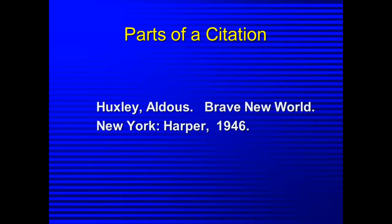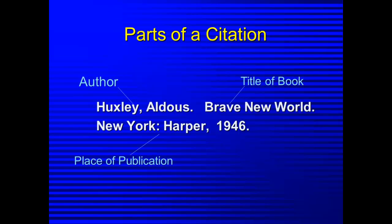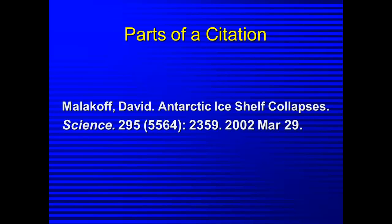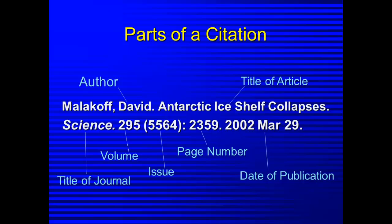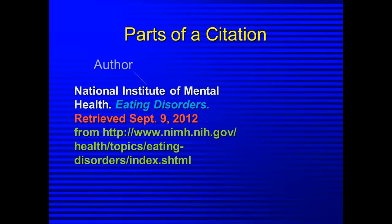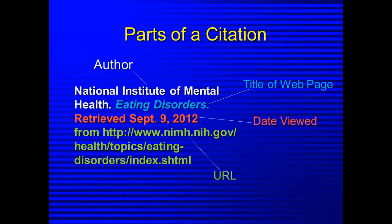Citations contain information to help readers locate the exact source you used. For example, the citation for the book Brave New World would include the author's name, the book title, the place of publication, and the date of publication. Article citations also include volume and issue numbers and page numbers. Since web resources change frequently and even disappear, the citation includes the date the item was viewed.